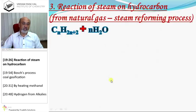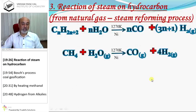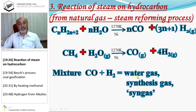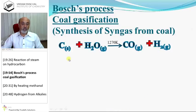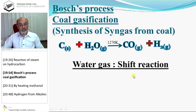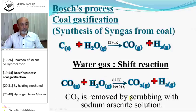Reaction of steam on hydrocarbons: when hydrocarbon is treated with steam, it produces carbon monoxide and hydrogen gas. For example, methane with steam gives CO + H2, known as water gas, synthesis gas, or steam gas. Bosch process (coal gasification): coal treated with steam at 1270 K produces CO + H2 (water gas). Water gas shift reaction at 673 K produces CO2 + H2. CO2 is removed by scrubbing with sodium arsenide solution to obtain hydrogen.